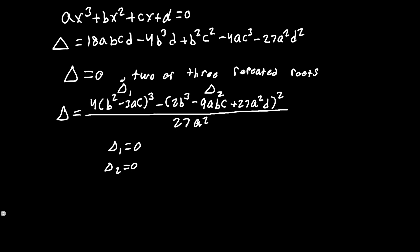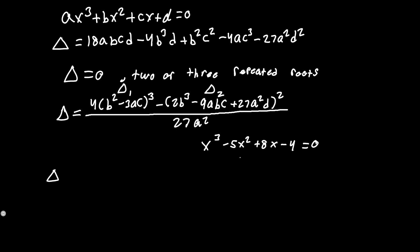So we now understand how to tell if a cubic has a repeated root — simply check if b² = 3ac. Now let's check whether we have two or three repeated roots using another example.